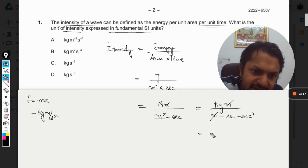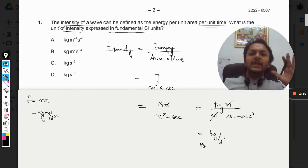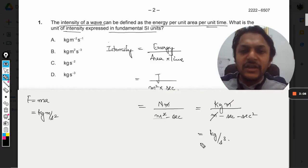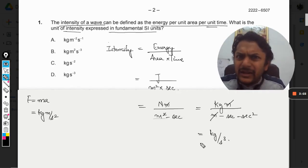Meter and meter gets cancelled, so it will be kg per second cube. This is how we keep on substituting the values until we get the fundamental units. Now this is the indirect method I can say, because we have used joule as the SI unit for energy.